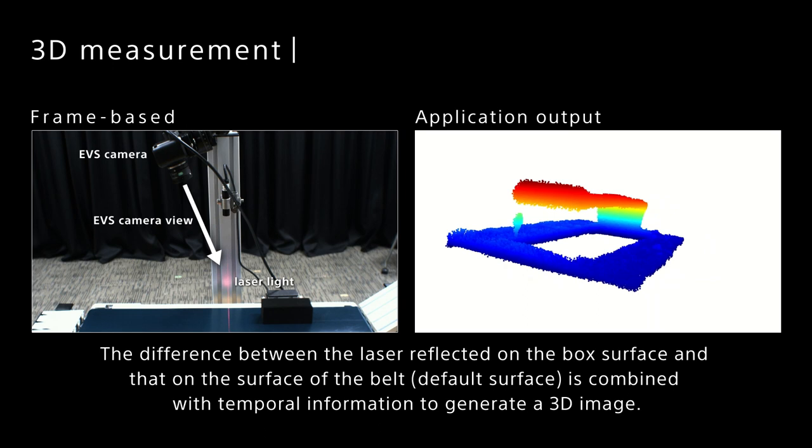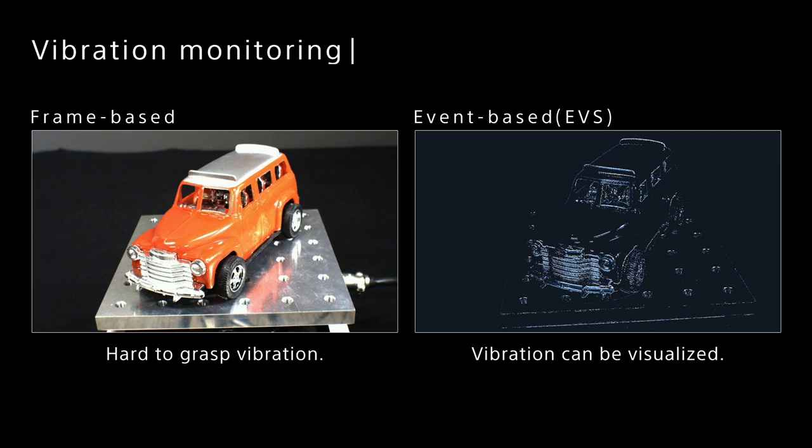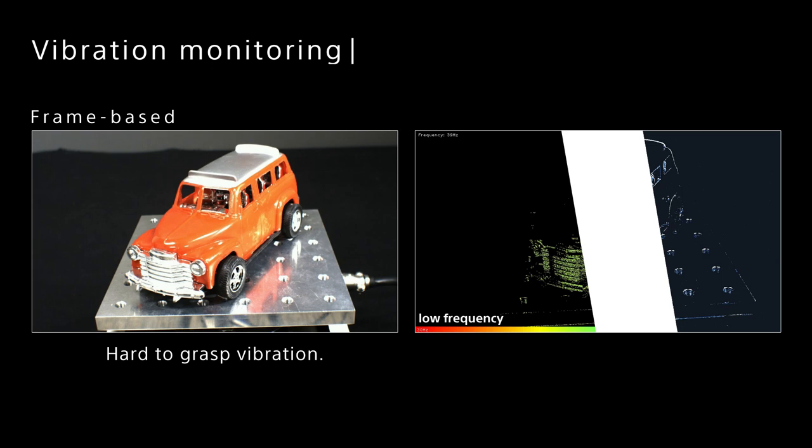Vibration monitoring. With EVS, only the vibrating parts are processed and output, so that the vibration is more clearly visualized. It is possible to take a frequency value for each pixel out of vibration.